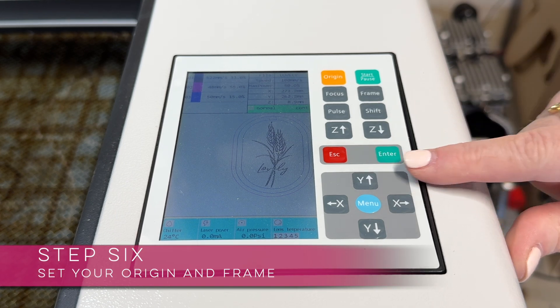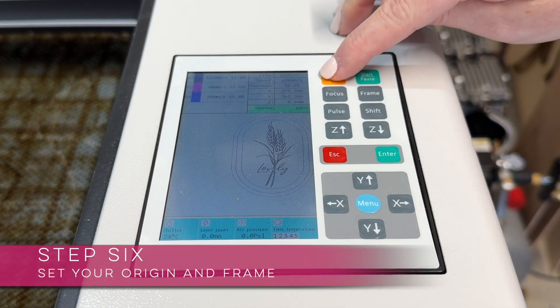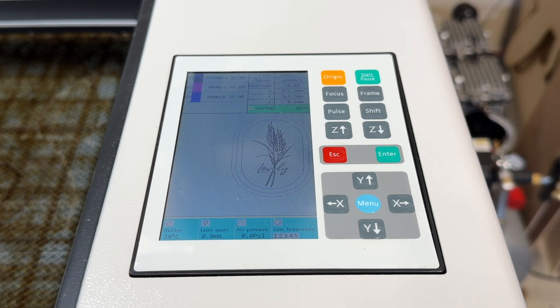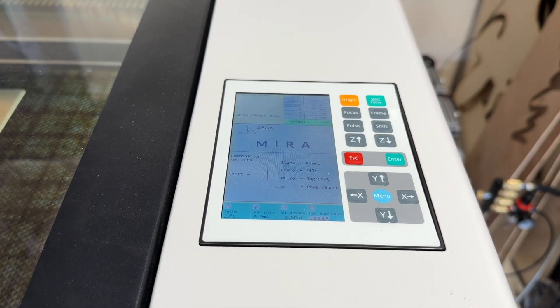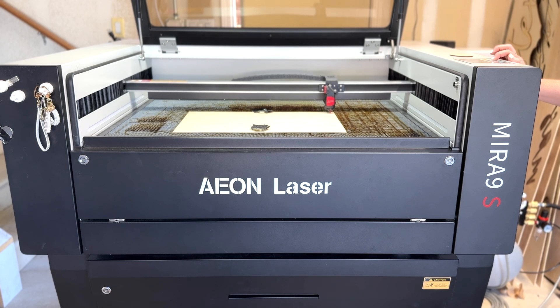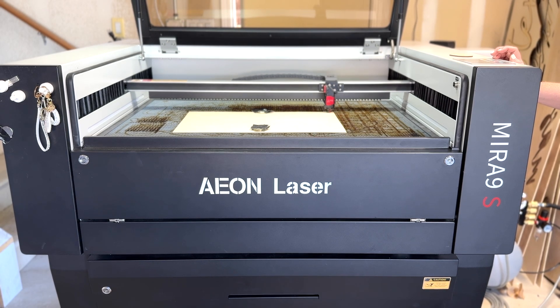Step number six is to set your origin and then hit the frame button. Origin determines where your job starts and when you hit the frame button the laser head will jog around your material and show you exactly where this project is going to fall. This allows you to get perfect placement every time.